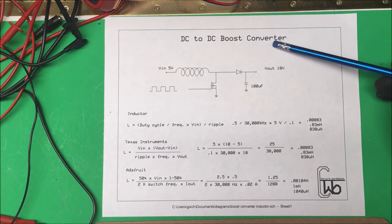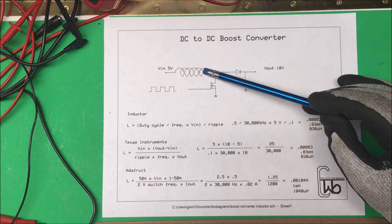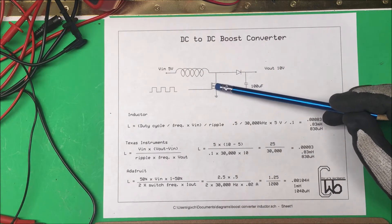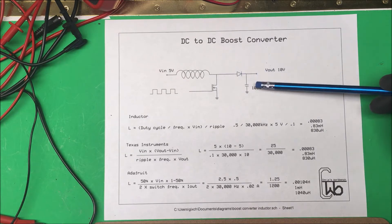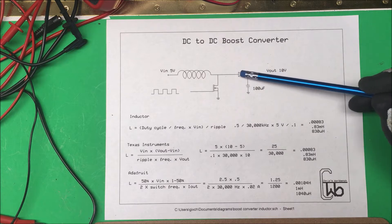Let's take a look at a DC to DC boost converter. I made one up here with an inductor and a switch using a MOSFET, this happens to be a 2N7000, and then a diode and a capacitor. The capacitor stores the voltage and the diode keeps the voltage from going back the other direction.